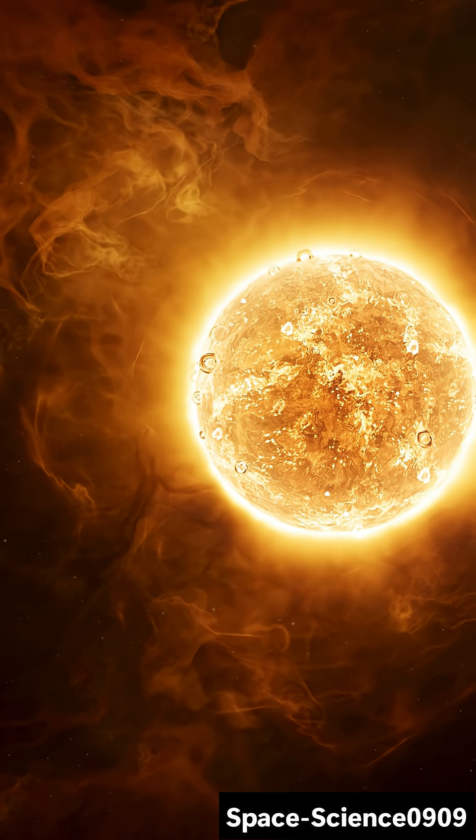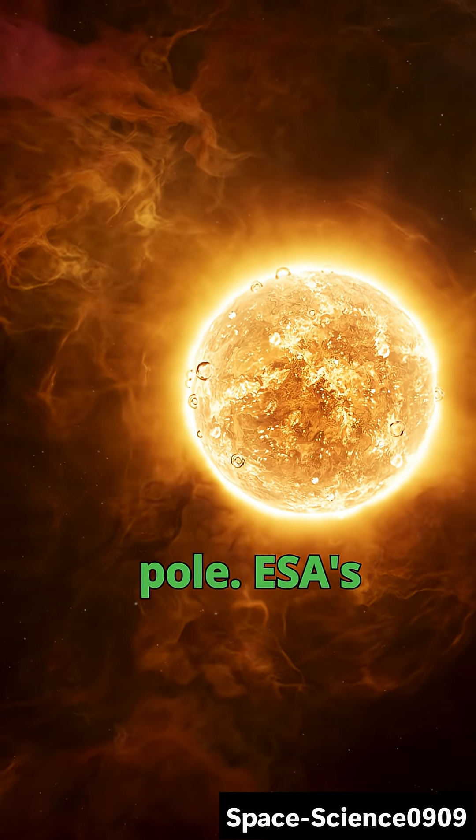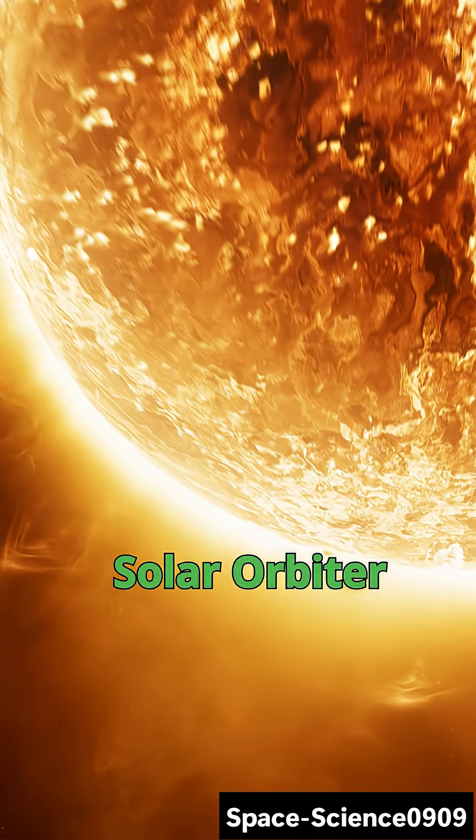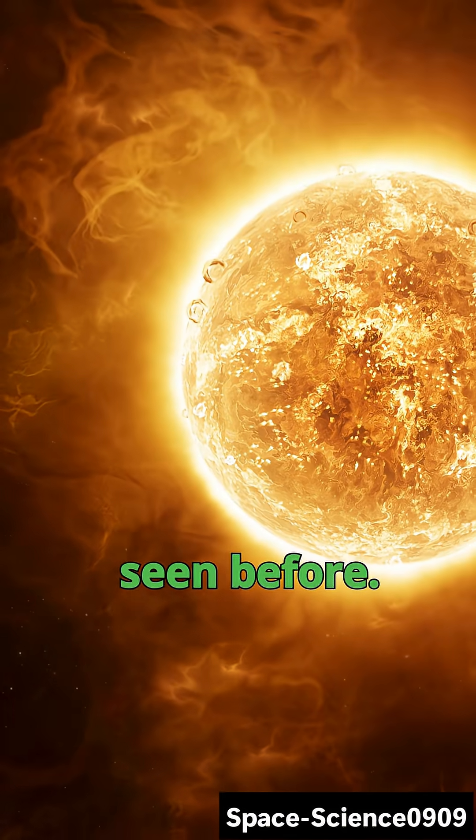For the first time ever, we've seen the sun's south pole. ESA's solar orbiter revealed wild magnetic structures we've never seen before.